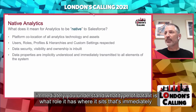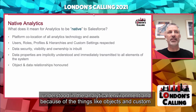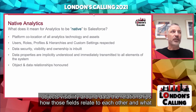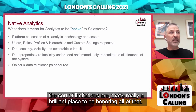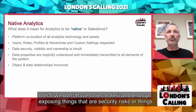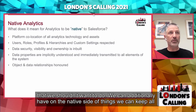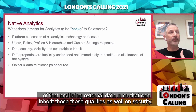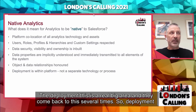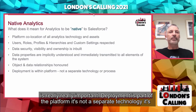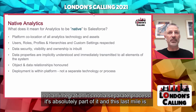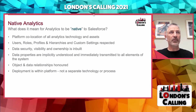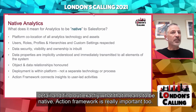Because of things like objects and custom objects, visibility around data, the relationships and how those fields relate to each other — that's really a brilliant place to be honoring all of that. We don't have to recreate it and end up exposing things that are security risks. We can additionally bring external data in so that it can inherit those qualities as well on security. Deployment is a really big area. Deployment is part of the platform — it's not a separate technology, it's not an integration, it's not a separate process. It's absolutely part of it. And this last mile is where an awful lot of these projects have tended to fail.